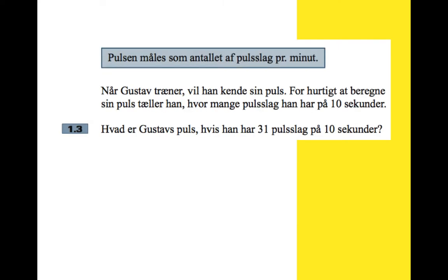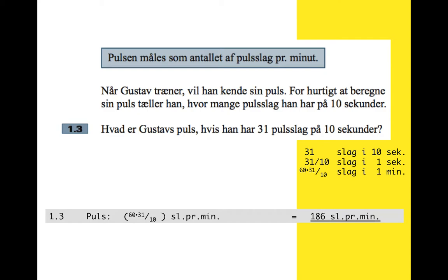Part three: your pulse is measured as the number of beats per minute. When Gustav trains, he wants to know his pulse. To quickly calculate his pulse, he counts how many beats he has in 10 seconds. What is Gustav's pulse if he has 31 beats in 10 seconds? So on my rough paper: 31 beats in 10 seconds, that's 31 divided by 10 beats in one second, then multiply by 60 to find out how many beats in one minute. So that corresponds to 186 beats per minute — his pulse is 186.